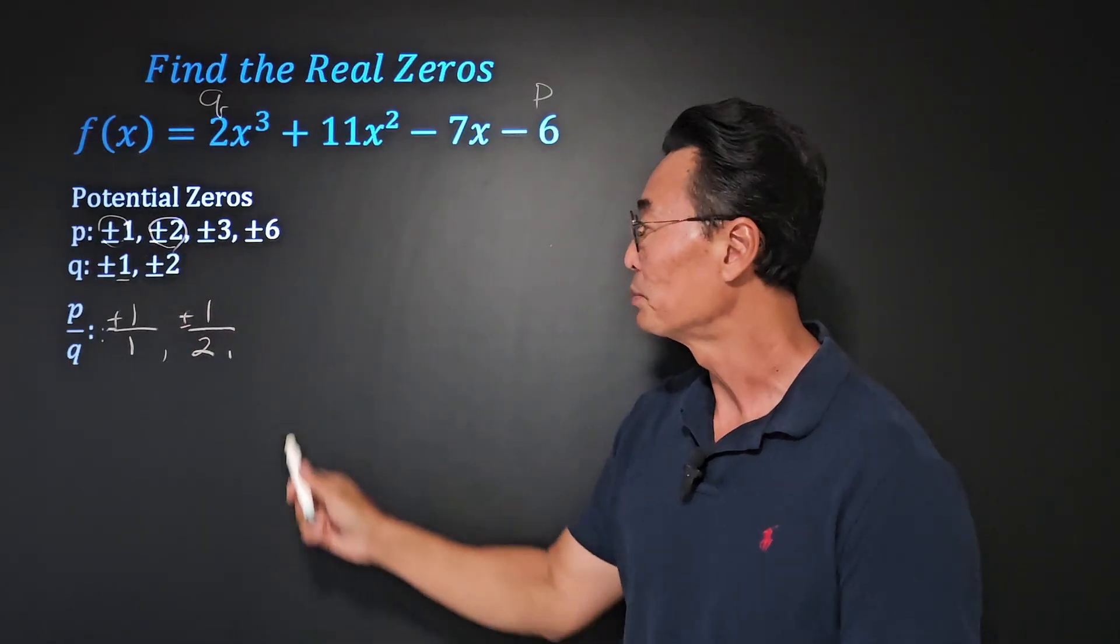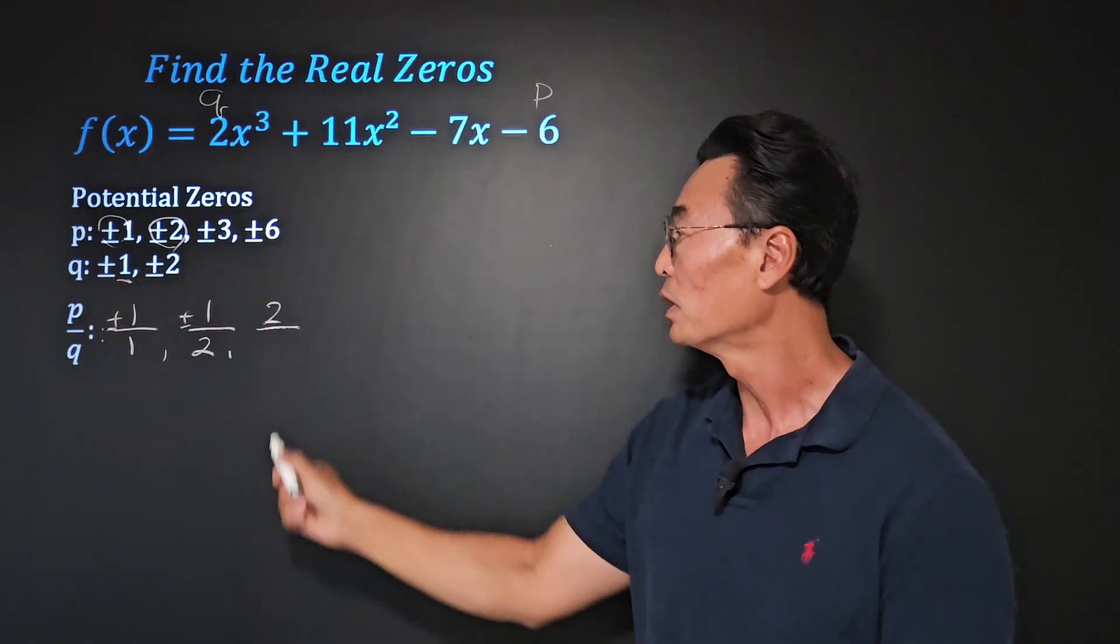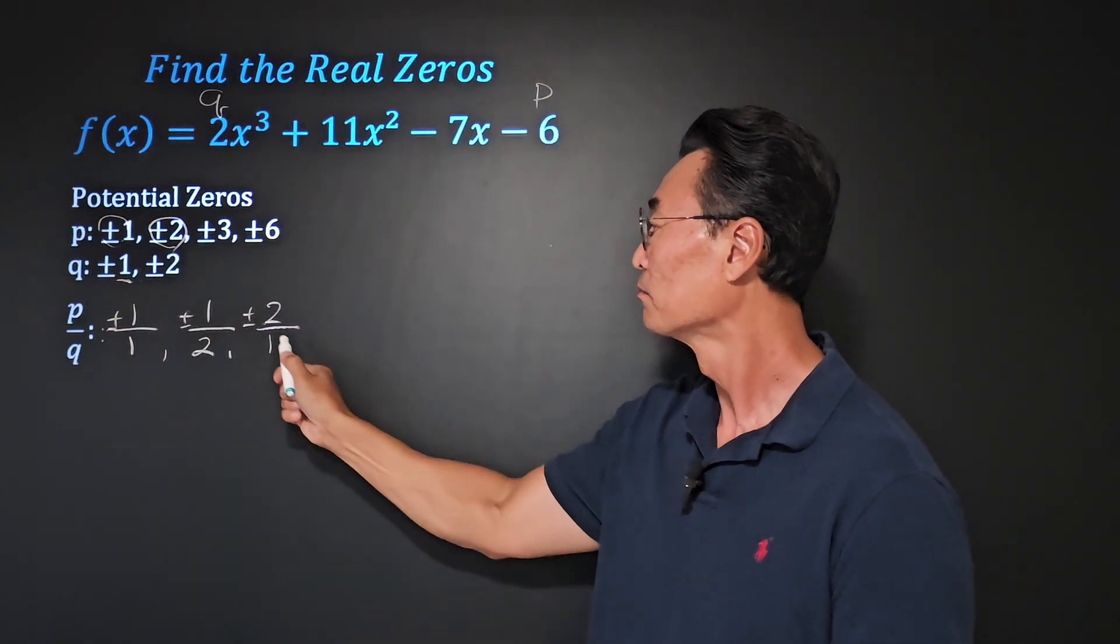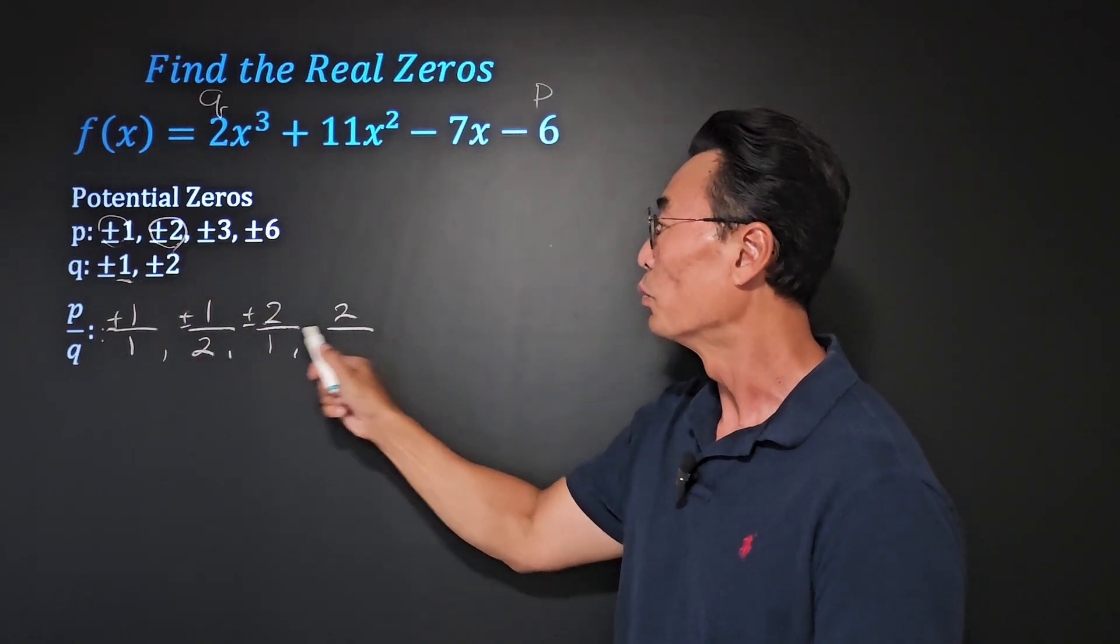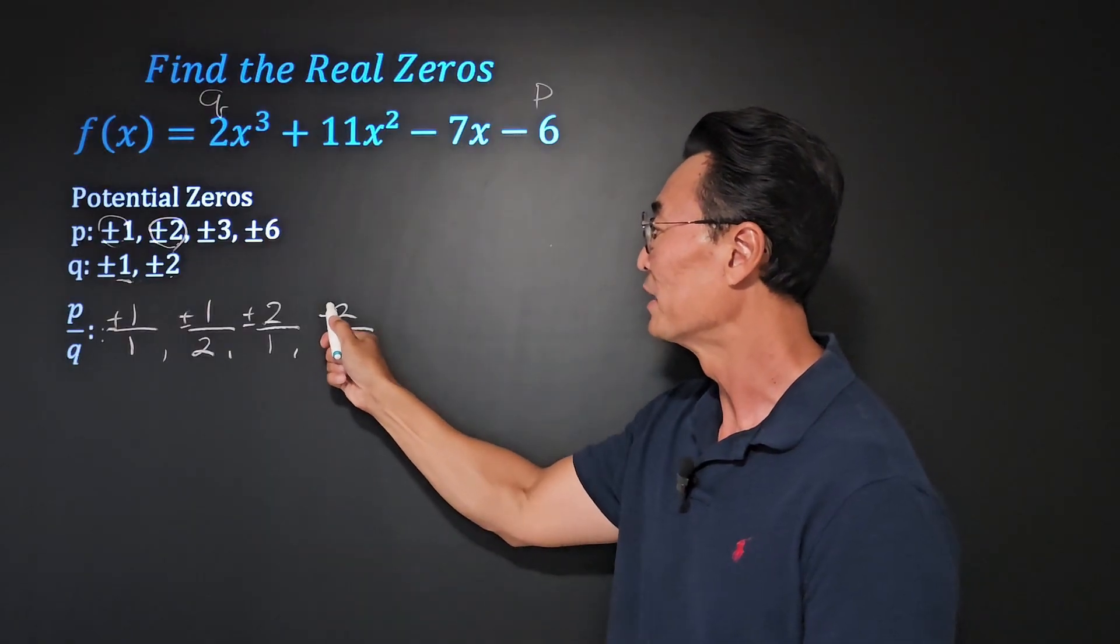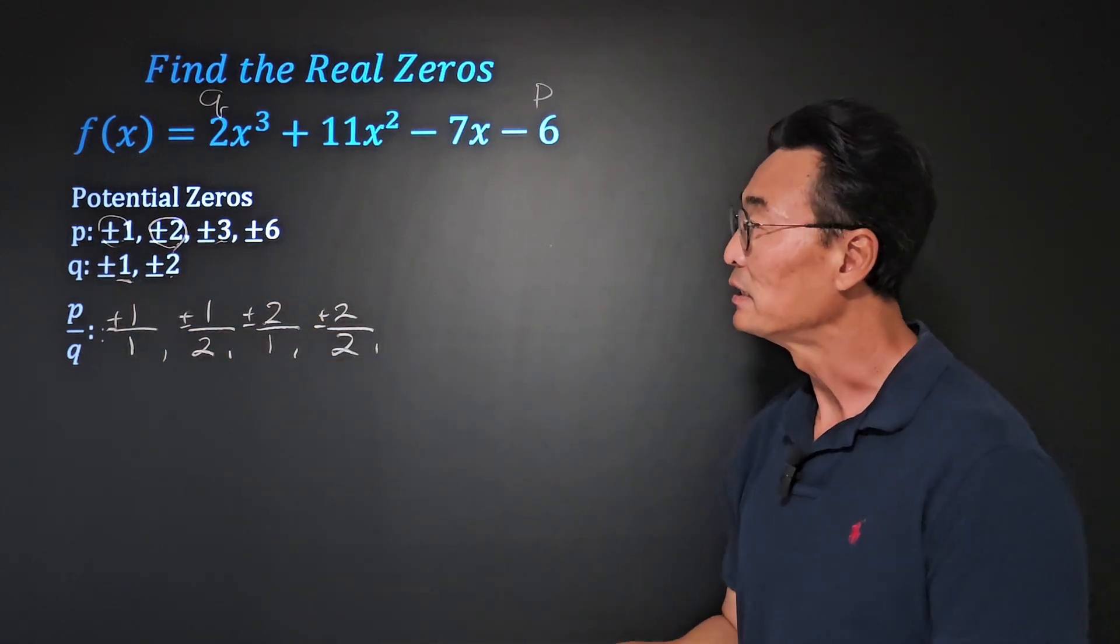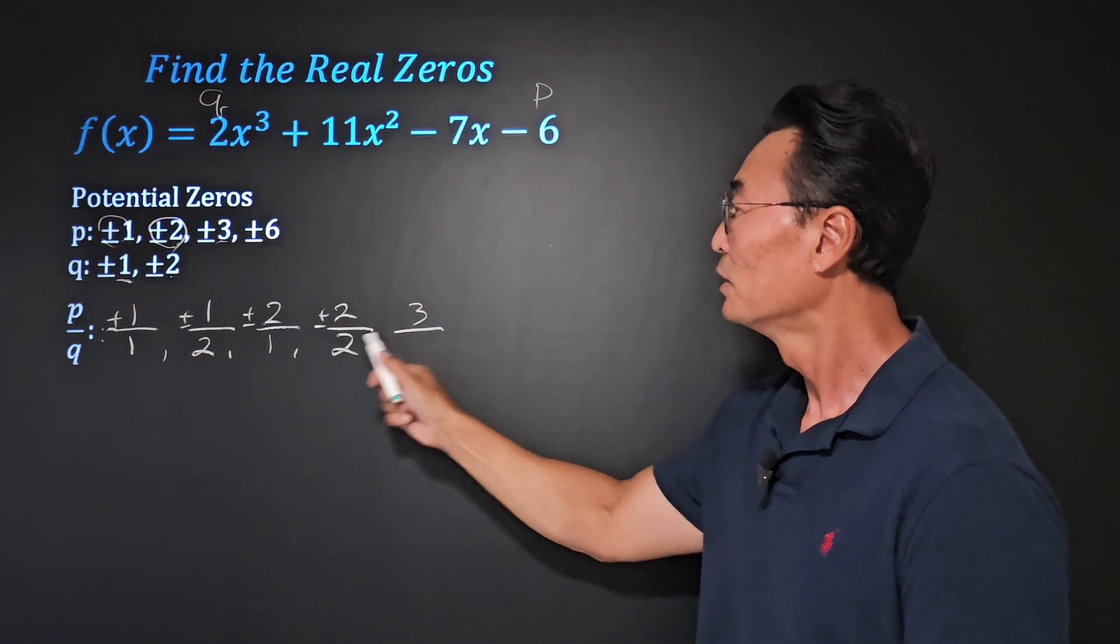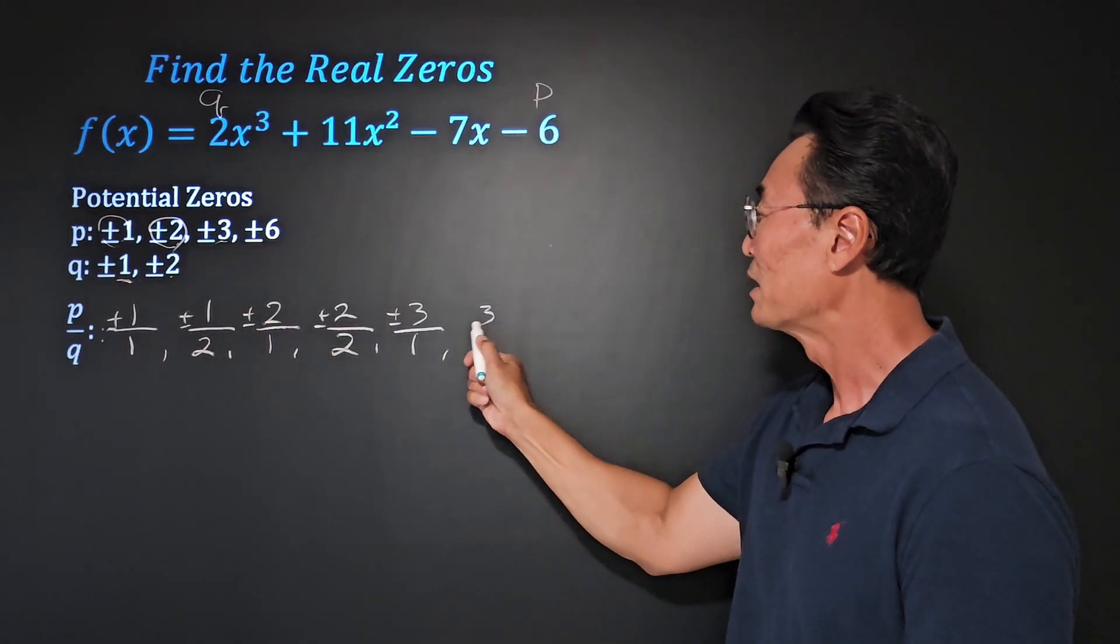Next, we're going to be using the 2 as the p, so we have 2 over, and again q is going to be 1, 2 over 1. Again, while keeping the p as a 2, we want to put 2 as the q in the denominator.